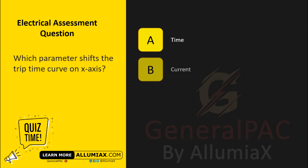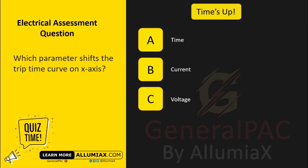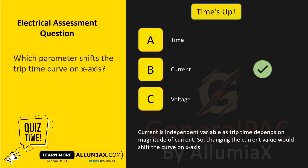A. Time. B. Current. C. Voltage. The answer is B. Current is an independent variable as trip time depends on magnitude of current, so changing the current value would shift the curve on the X axis.